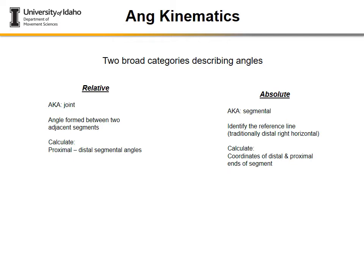There are two broad categories when we talk about angles. A relative angle is also known as a joint angle — because it refers to joints such as the knee, ankle, hip, elbow, and shoulder — and it is the angle formed between two segments. It is called 'relative' because it is relative to the positioning of those two segments. The calculation takes the proximal segment angle — in this case the thigh — and subtracts the shank angle, giving the angle created between them.